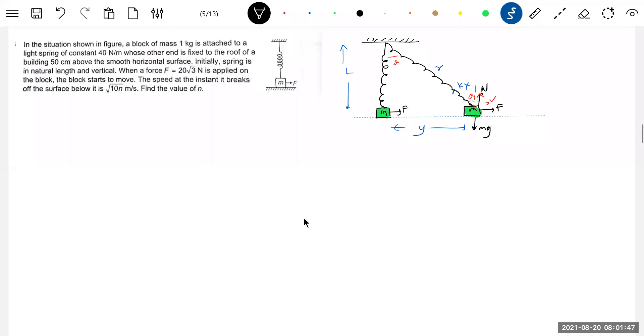Till here is what we have a diagram. So now for block to lose contact, N must be equal to zero. So then K X cos theta should be equal to MG. What is X? R minus L. L should be no sir, R minus L. Okay, thanks for correction.